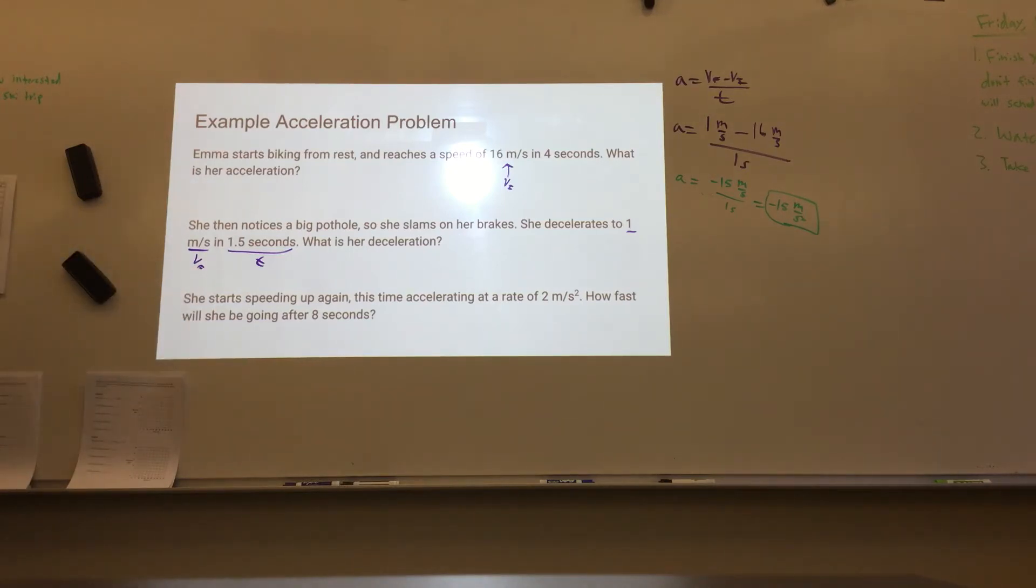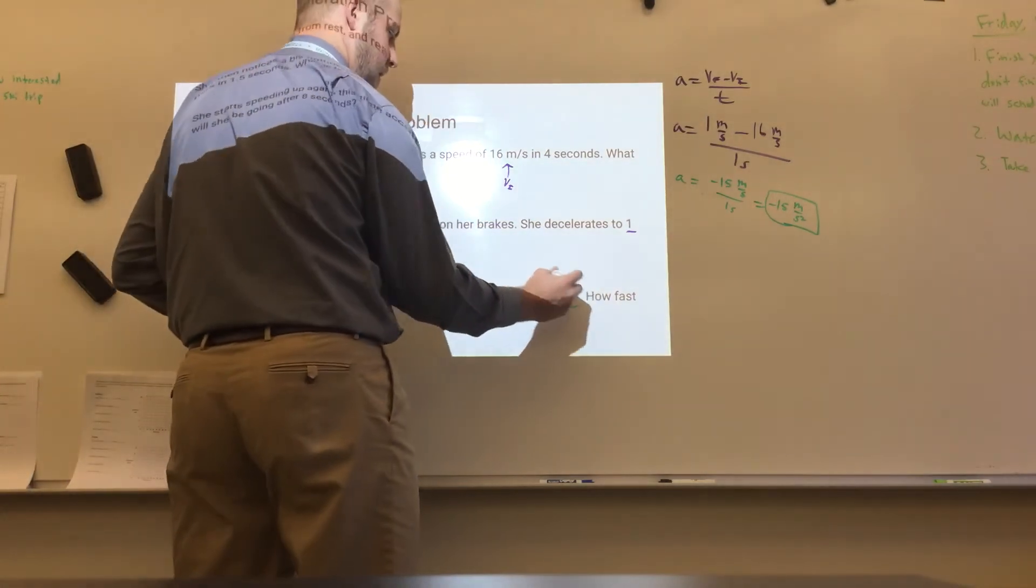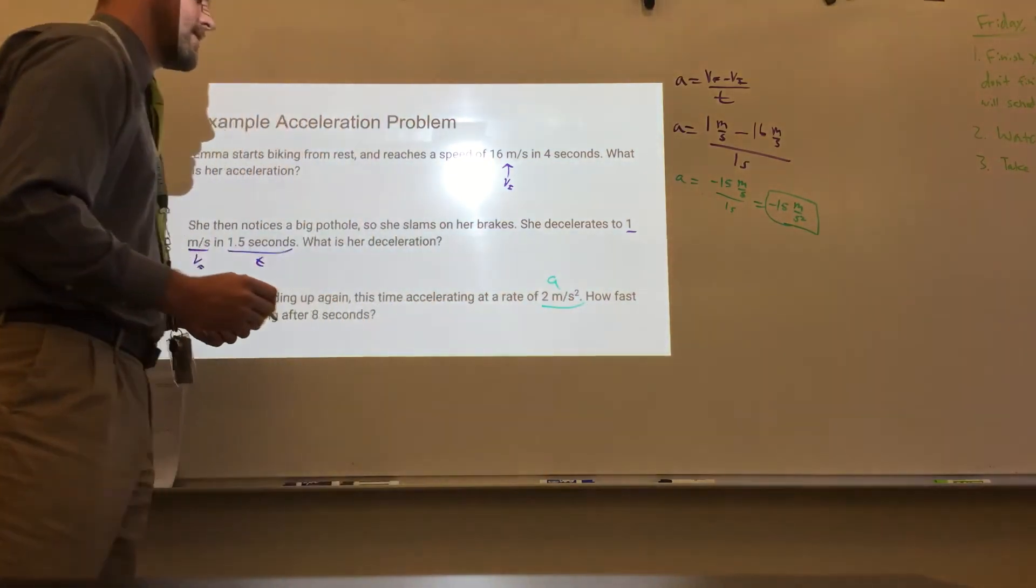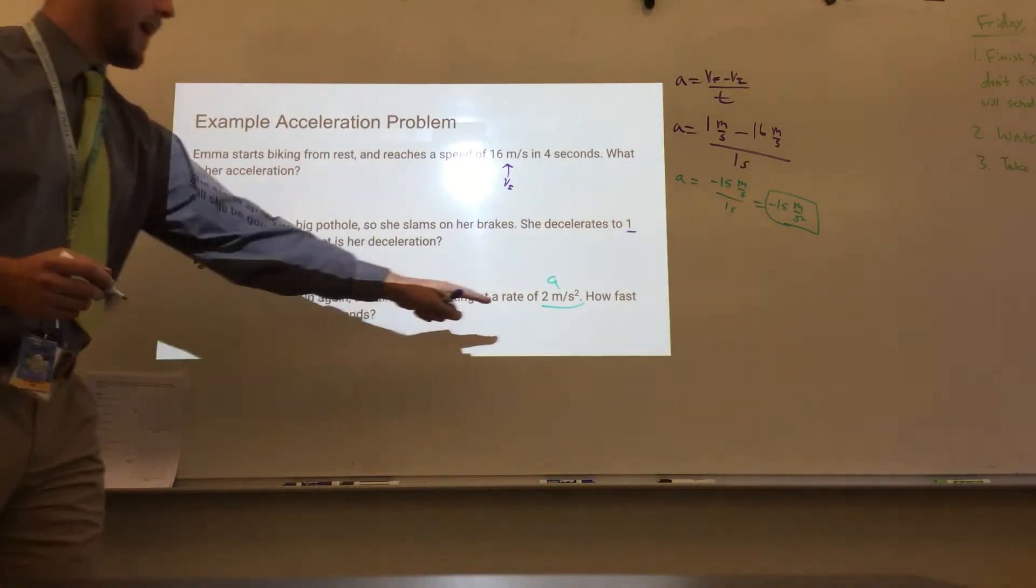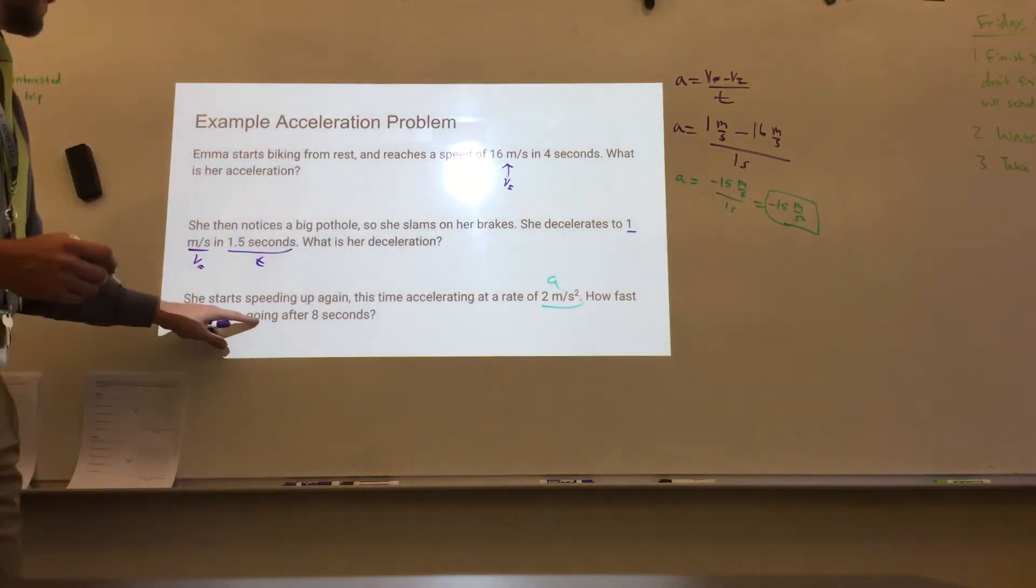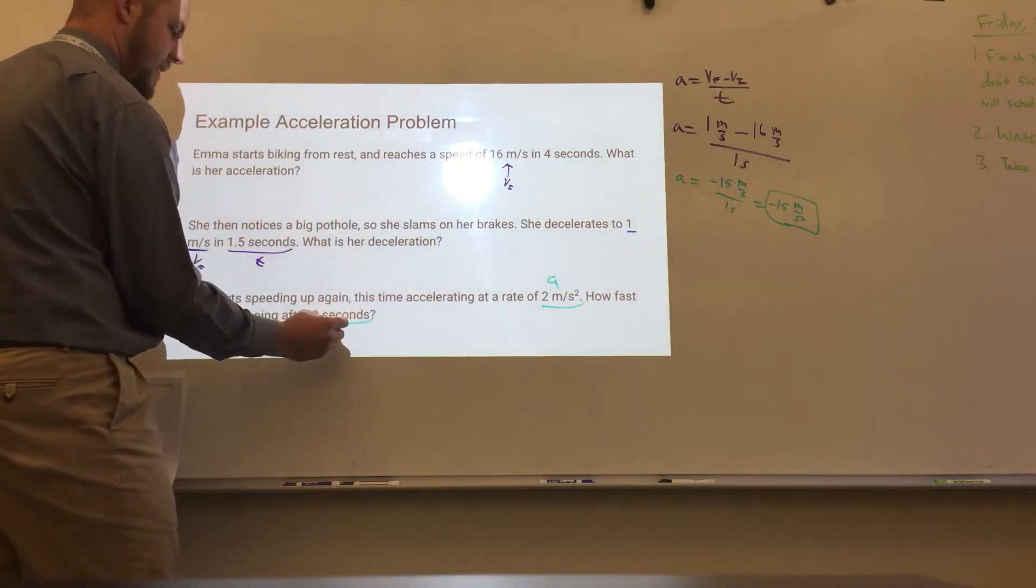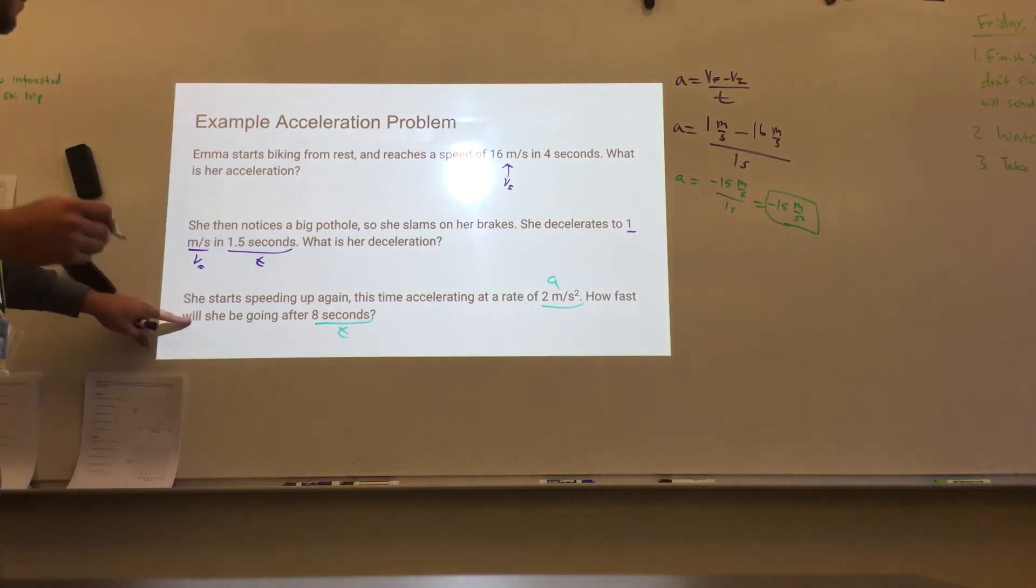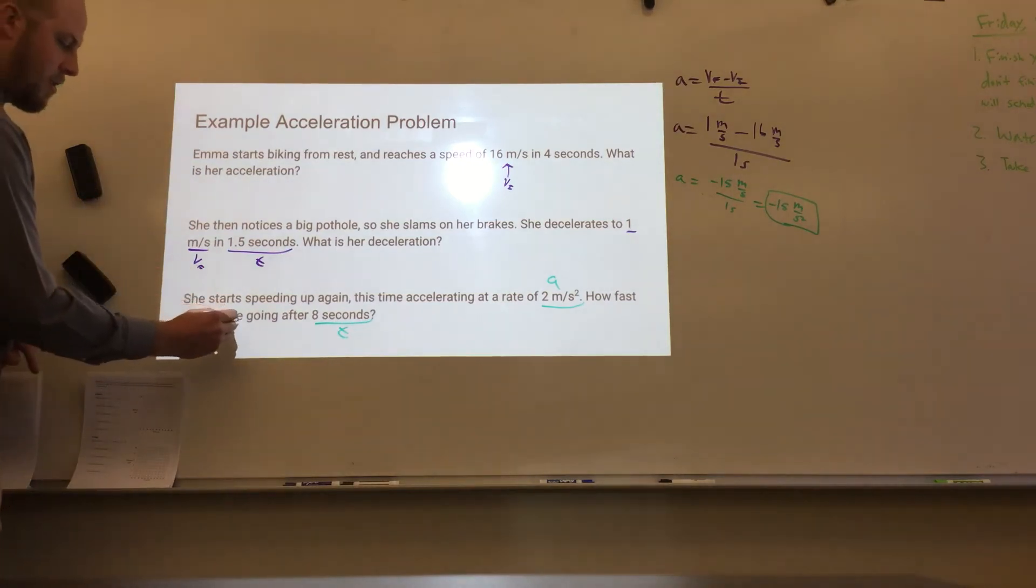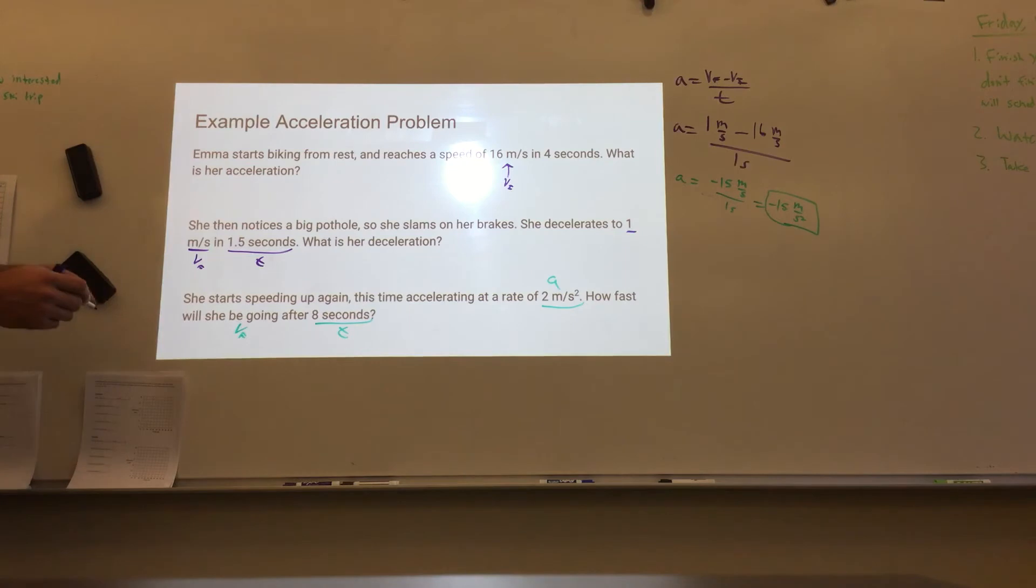Last question here is a little more difficult. She starts speeding up again, this time accelerating at a rate of 2 meters per second squared. So what I just told you right here, that is her A, her acceleration. I'm asking you how fast will she be going after 8 seconds? 8 seconds, that's our time. How fast will she be going? That's asking for her velocity final. And you need to use the velocity initial from this problem.